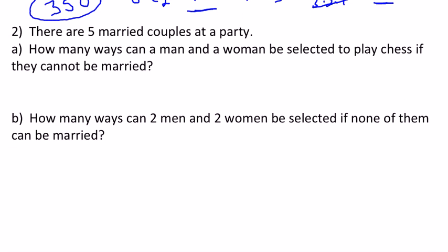Problem number two is a little bit more challenging, because it makes you think a little bit. First one says there are five married couples at a party. How many ways can a man and a woman be selected to play chess if they cannot be married?